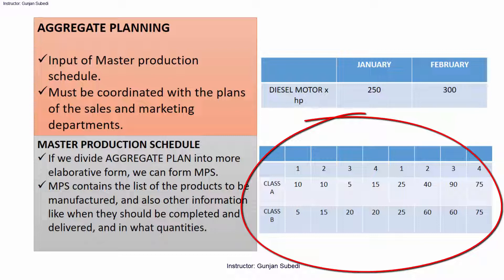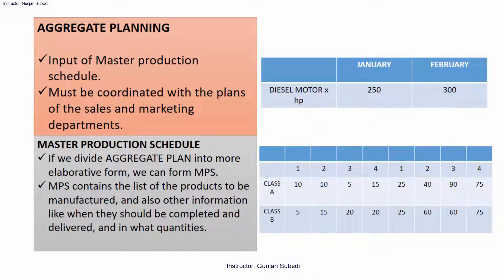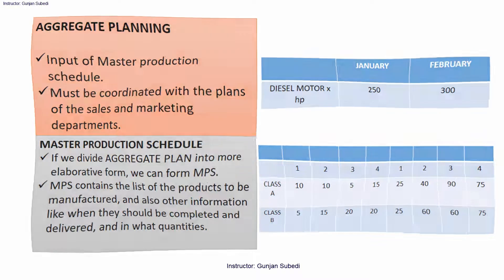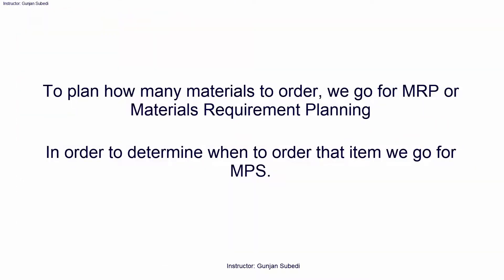If we divide the aggregate plan into a more elaborative form — depicting the number of parts to be produced each week of the month, or each model of the motor to be produced — we have the master production schedule. The MPS contains the list of products to be manufactured, when they should be completed and delivered, and in what quantities.